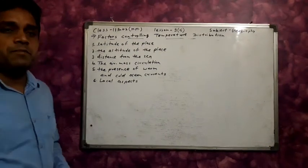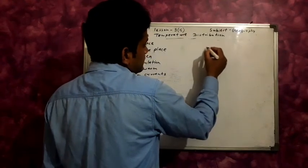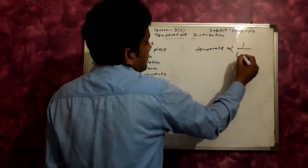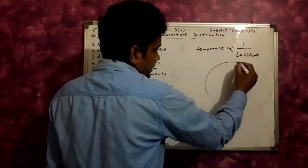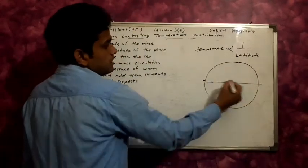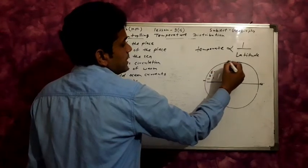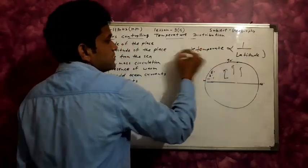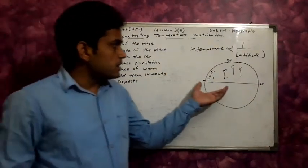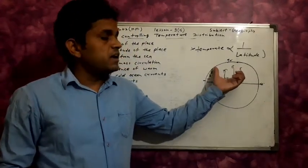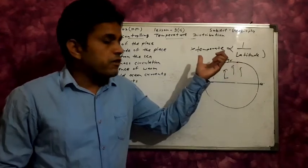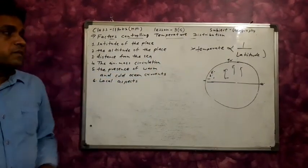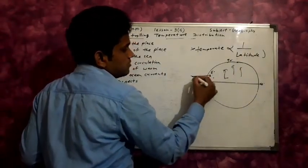Regarding latitude of the place: as latitude increases — from 0 degrees to 1, 2, 45, 60, and up to 90 degrees — temperature decreases. Latitude increases, temperature decreases. Near the polar region, temperature is found to be low. Where the sun rises vertically, temperature is high.